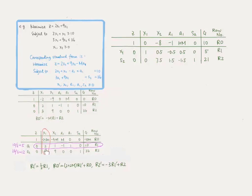We wish to make the key element 2 equal to 1 and all other values in this column equal to 0. Using the following row operations, we get the third system. Our current basic feasible solution is: x2 equals 0, e1 equals 0, a1 equals 0, x1 equals 5, s2 equals 21, and the corresponding z equals 10.